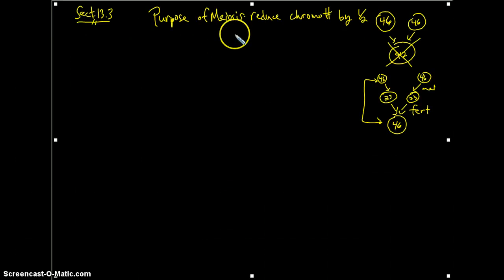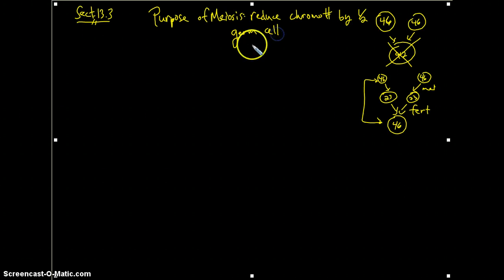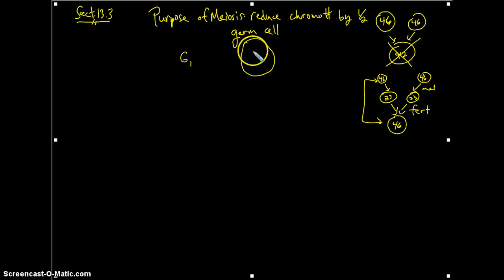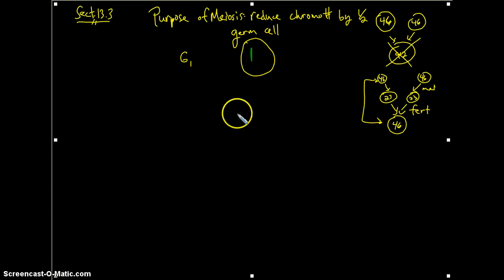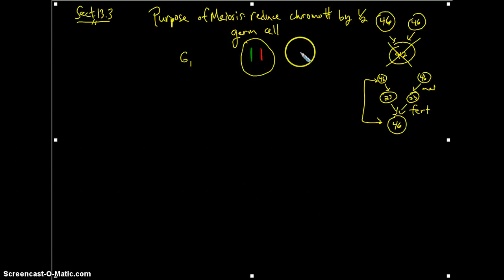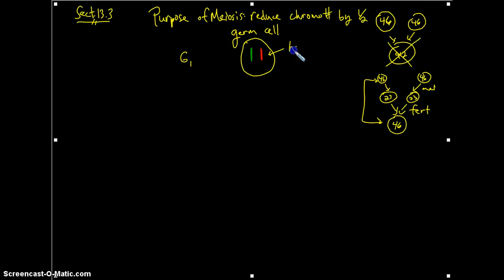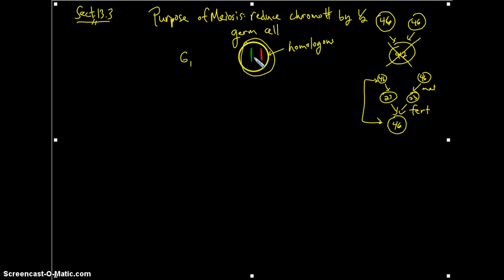So to look at this visually, let's create a germ cell. Again, these are the cells that undergo meiosis to create the gametes or sex cells. So here's our germ cell, we'll call this G1 of interphase. Now, we'll have a chromosome from biological mom and a chromosome from biological dad. Now, recall that these are referred to as homologous chromosomes or homologs, similar in size, shape, and banding pattern, and they'll have some similarities in the alleles that they share.